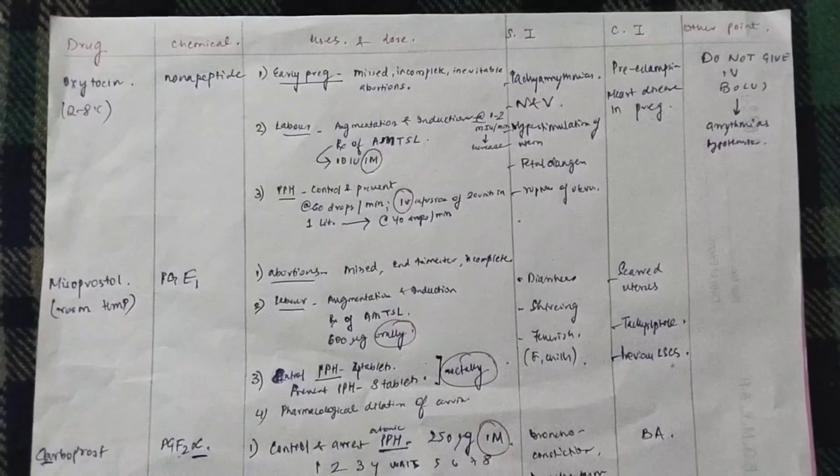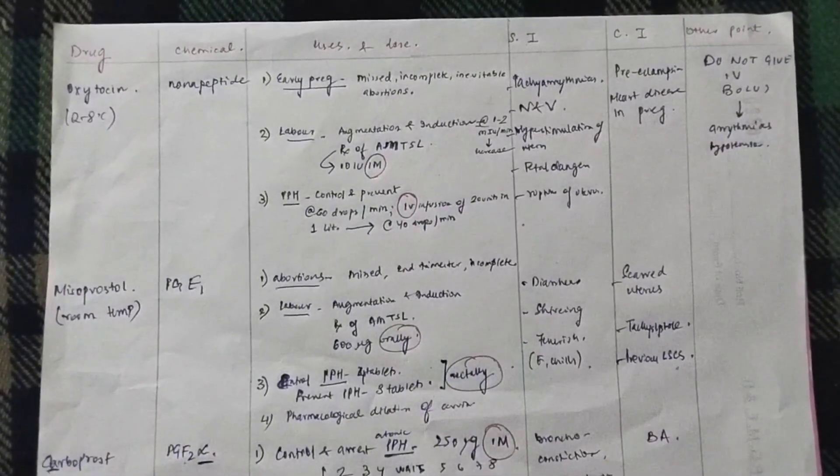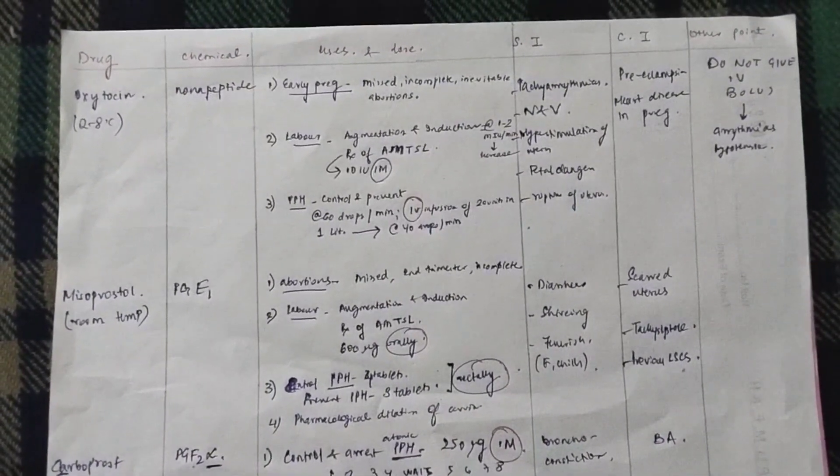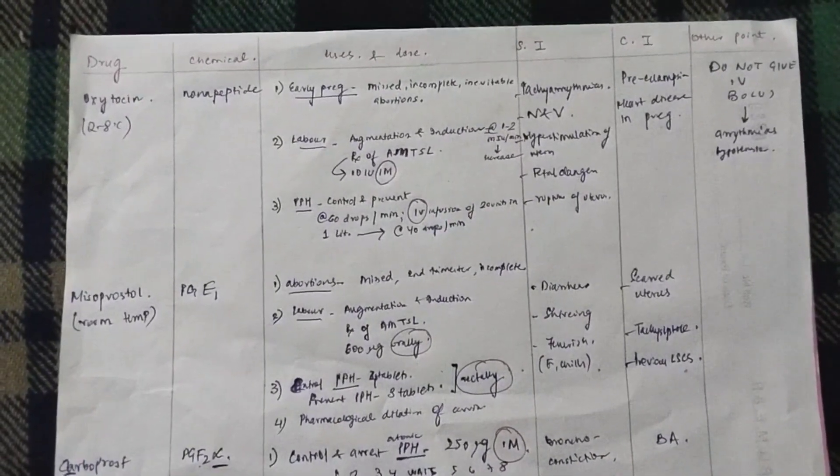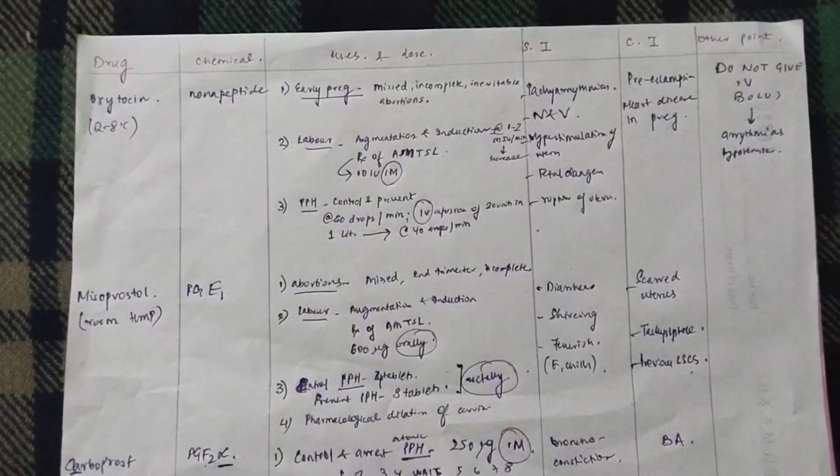This is a very commonly asked question in your vivas and may come as a short note in your theory exams as well. So, whenever you are studying a drug, you should know what is the chemical composition of that drug, what are the uses of the drug, what are the side effects, what are the contraindications and what are the special points in this drug.